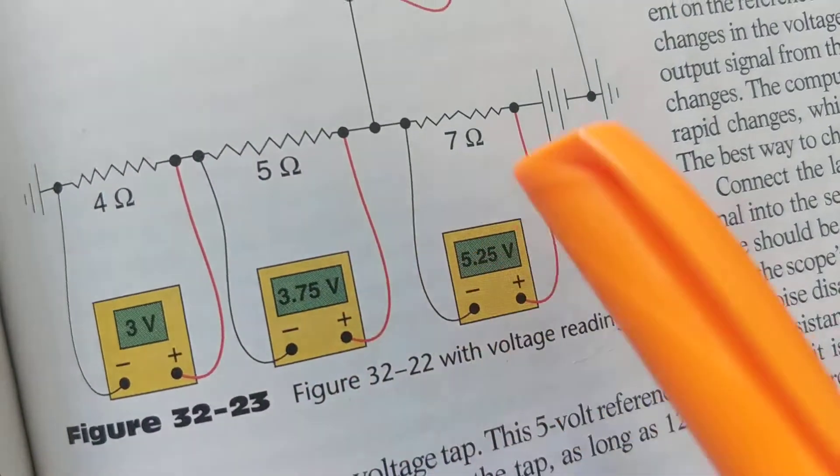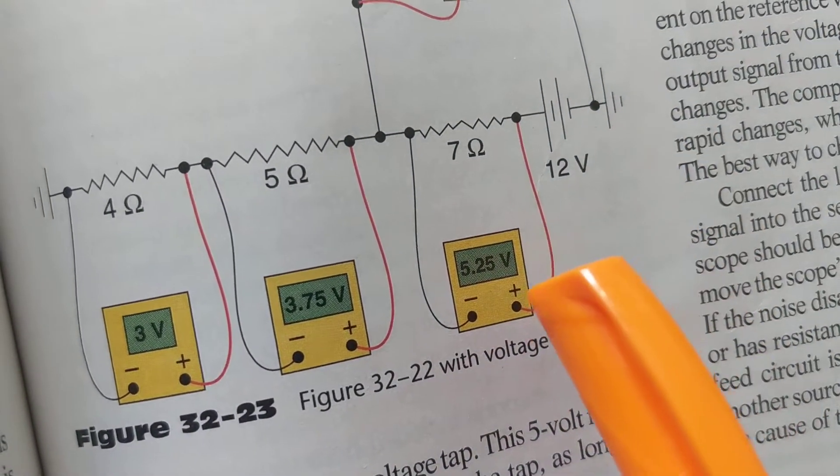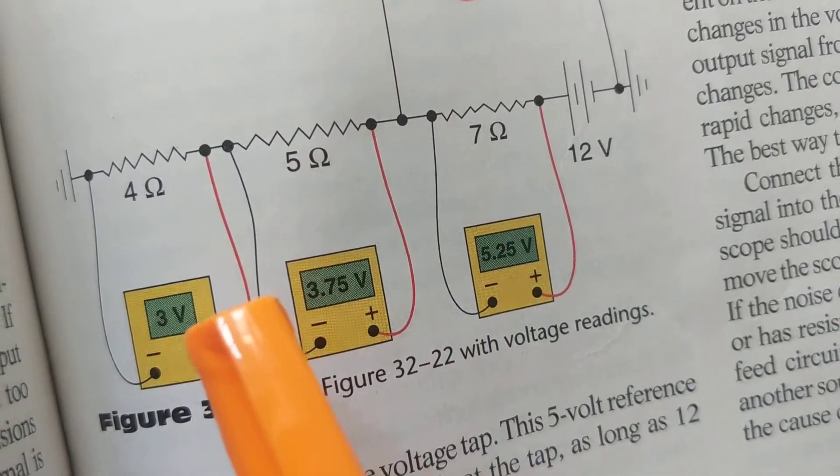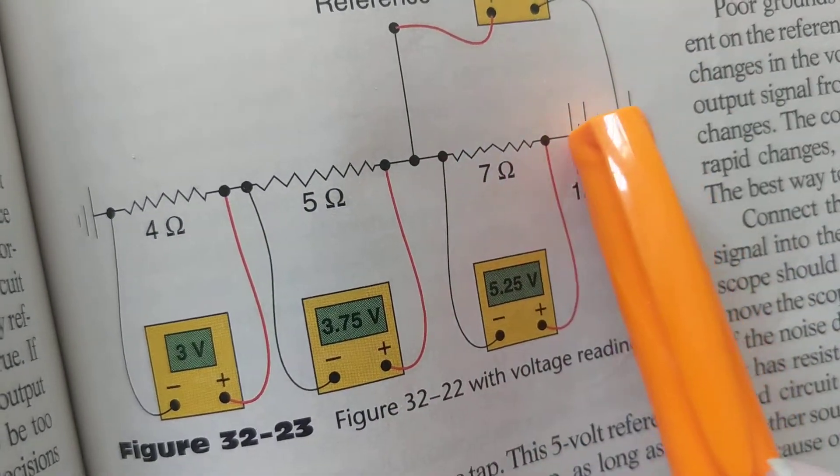So therefore if we take the negative, we take the positive, now we measure how much? 5.25 volts, which is more than this one and more than this one. Why? Because the resistance is more. It's the same current.